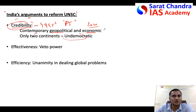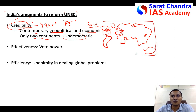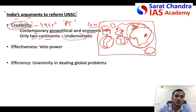The UNSC is also undemocratic. If you draw a world map, you can see that among the P5, the USA, France, and UK represent only Western Europe and North America; China represents only part of Asia; and Russia covers Eurasia. There is no representation for South America, Africa, or Australia. This lack of geographical uniformity means there is no equal representation for all continents, making the UNSC undemocratic and lacking credibility.